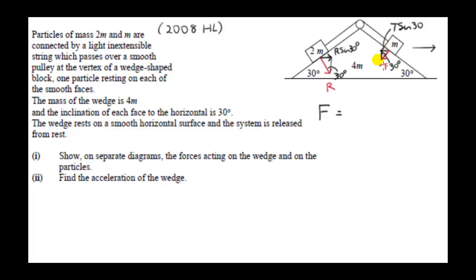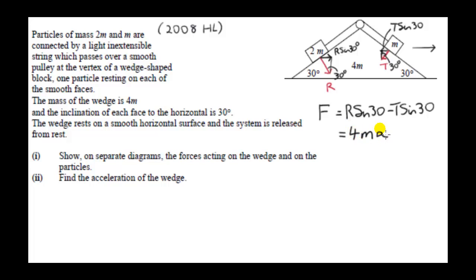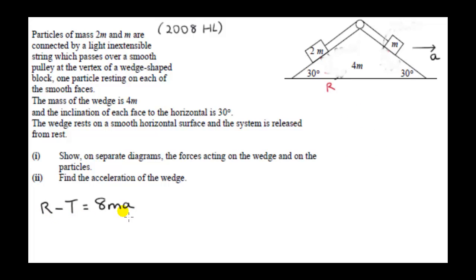The resultant force on the wedge comes from those two horizontal components. Taking directions to the right as positive, it's plus R sin 30 minus T sin 30. By Newton's second law, that equals the mass of the wedge, which is 4m, times its acceleration A. Since sin 30 is a half, we multiply this equation by two. We can see that we have three unknowns in this equation.